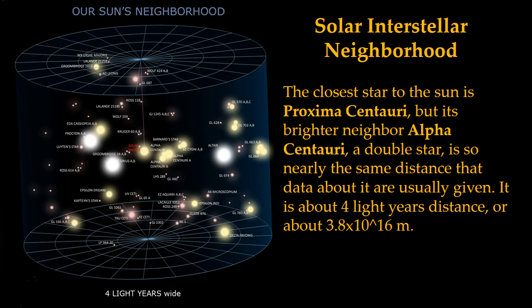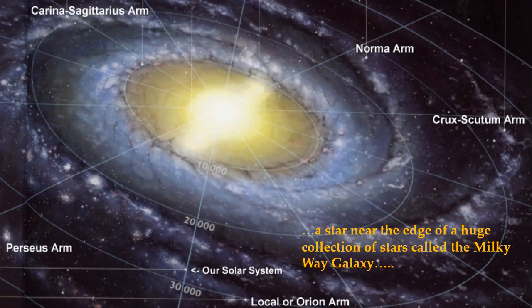Our Sun is nothing more than a star, but in that neighborhood our Sun — which is part of our solar system — is actually part of what is called the solar interstellar neighborhood. Our closest star is Proxima Centauri and Alpha Centauri, kind of right next to each other in what I call a binary star system, and they're about 4.3 light-years away. So you're looking at Earth, solar system, solar interstellar neighborhood.